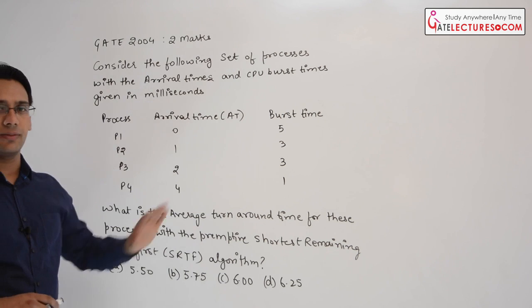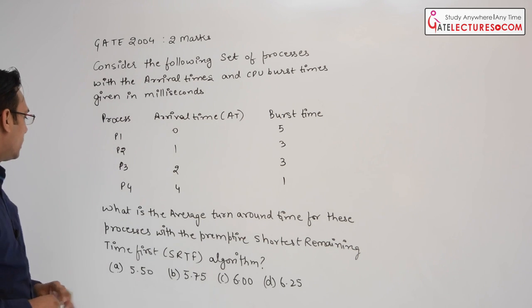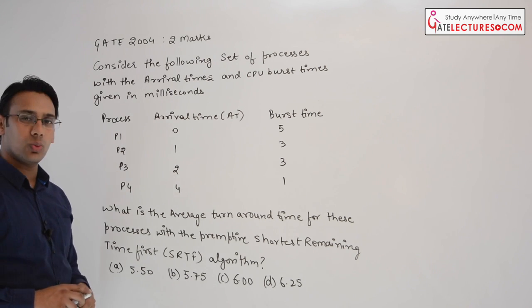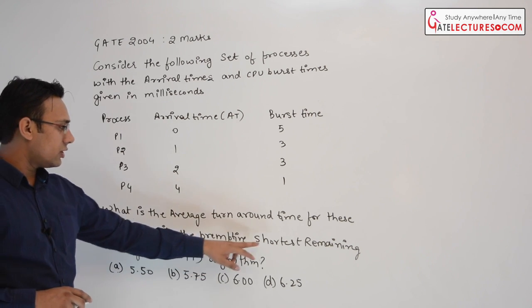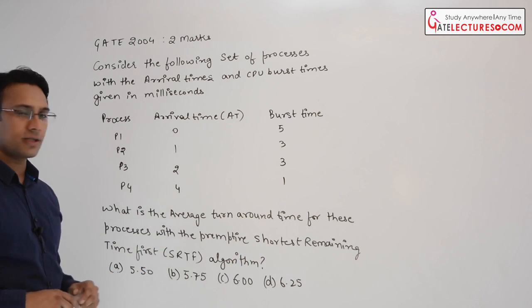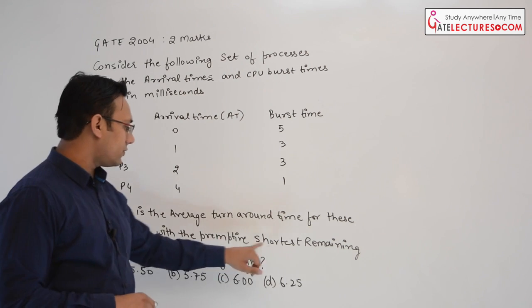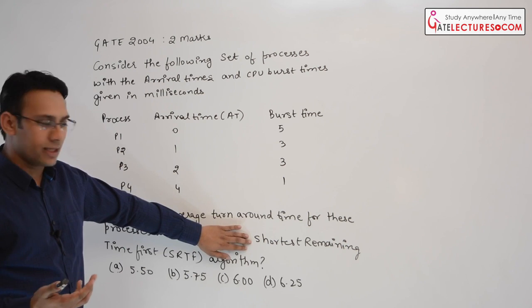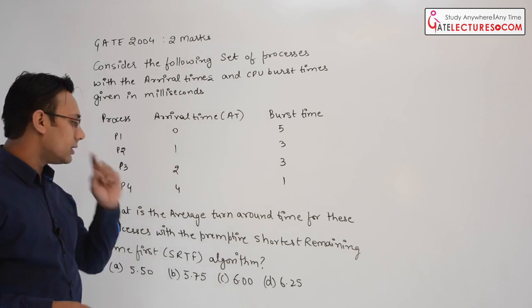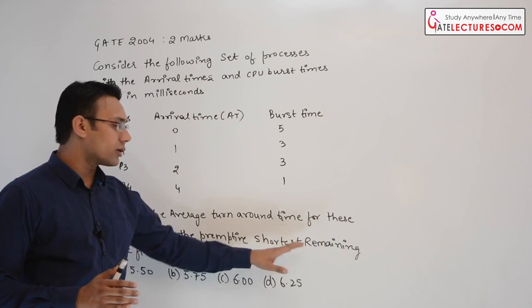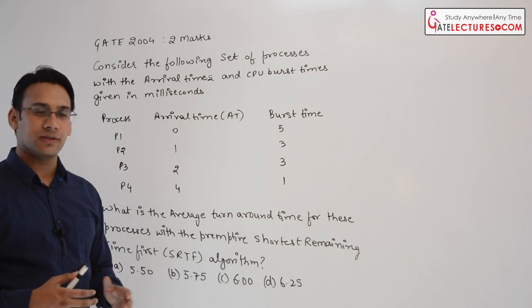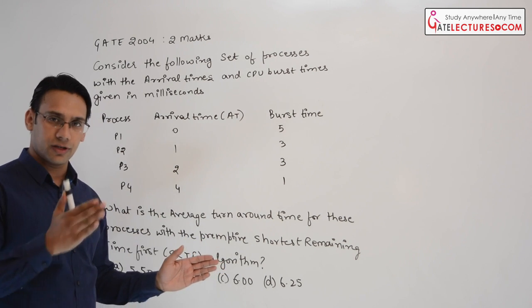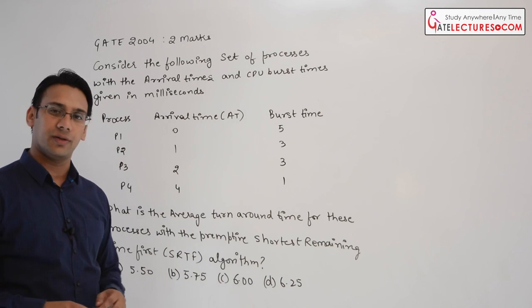We have the arrival time and the burst time given in milliseconds. They are asking what is the average turnaround time for these processes with the preemptive shortest remaining time first algorithm. Even if they do not specify preemption, shortest remaining time first implies shortest job first with preemption — when we add preemption to SJF it becomes the shortest remaining time first algorithm.